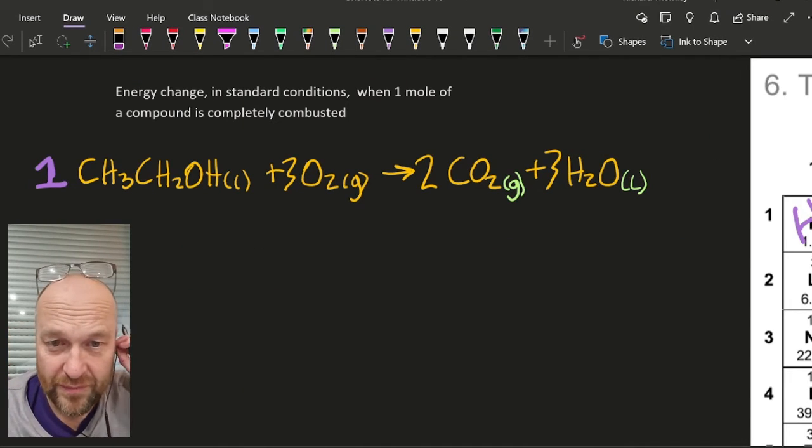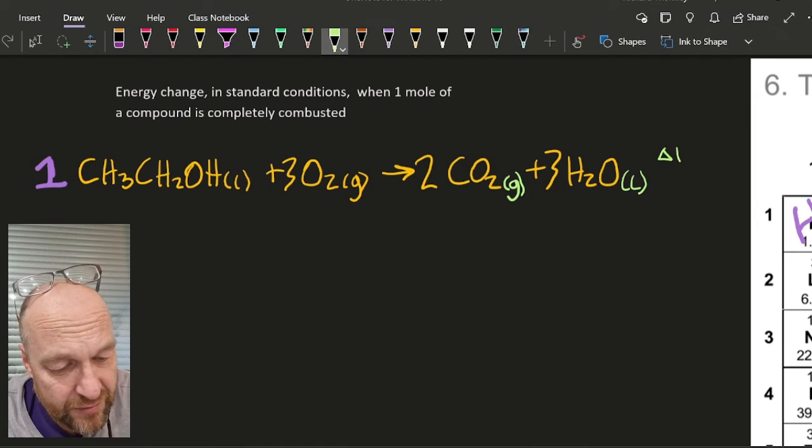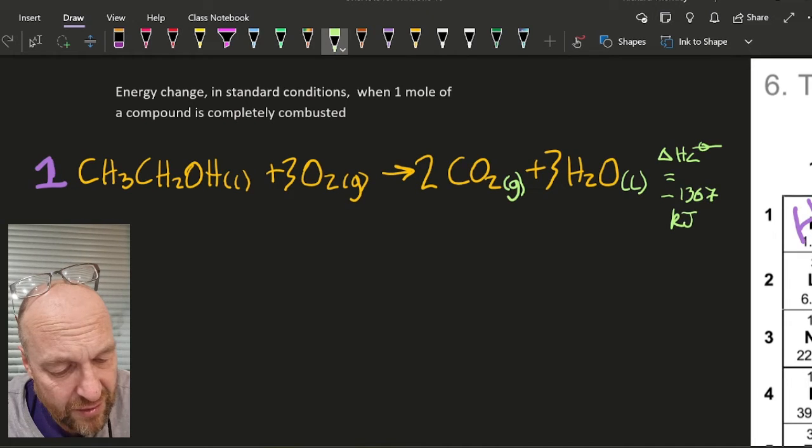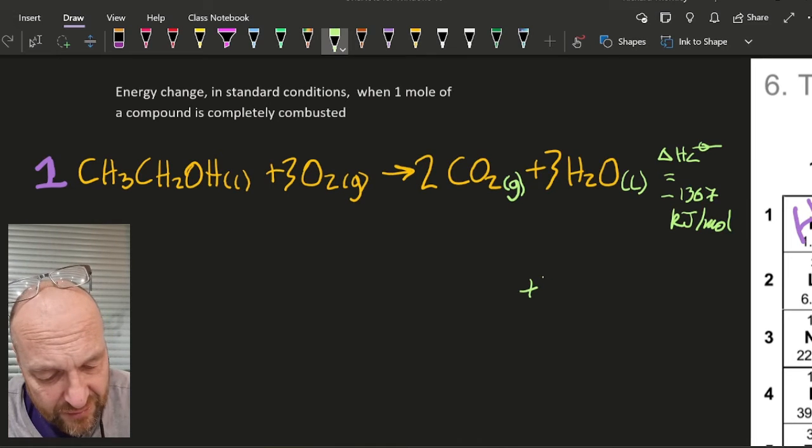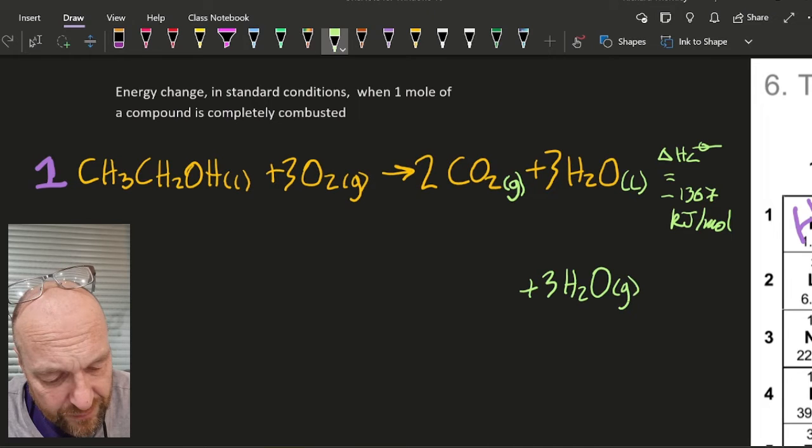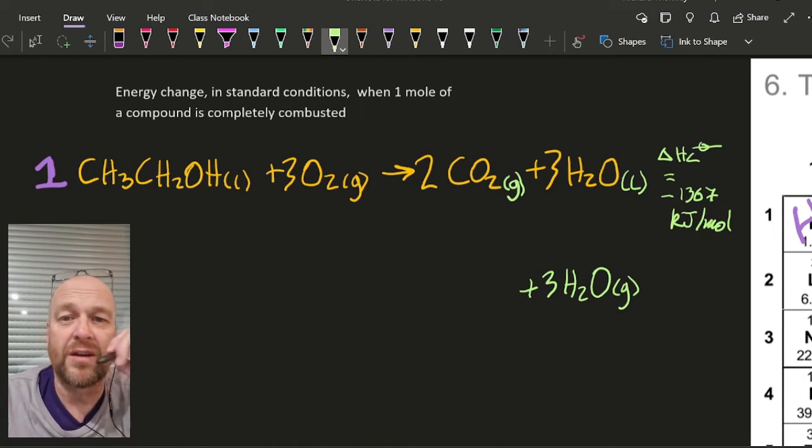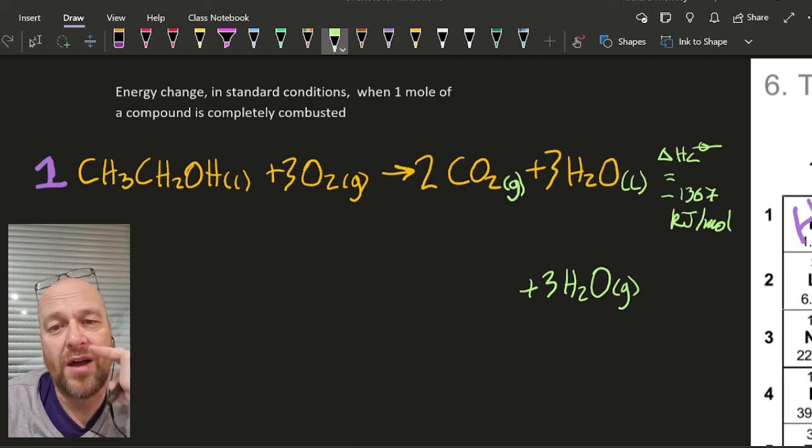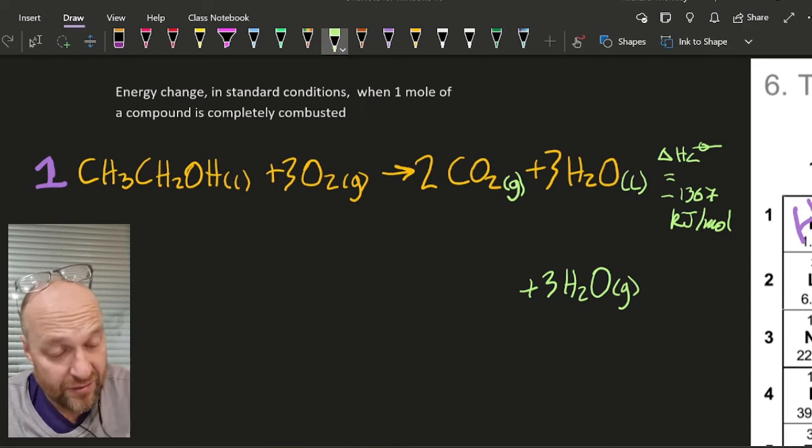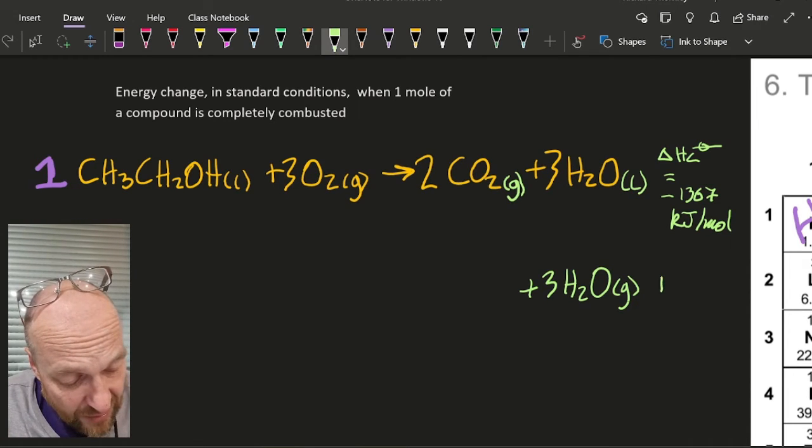They have asked quite a cheeky question before. Well, delta Hc for this is actually minus 1367 kilojoules per mole. And what they've asked is: okay, let's say you really did this but you made three gaseous molecules instead of liquid. How would that delta H value change?